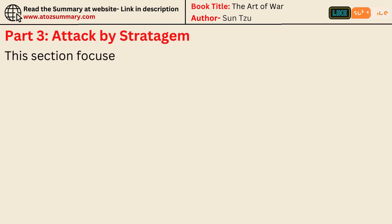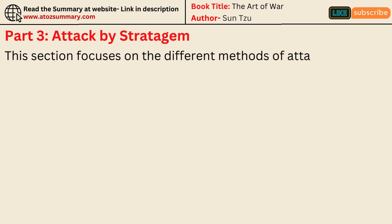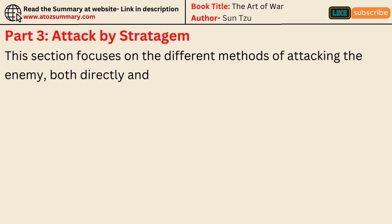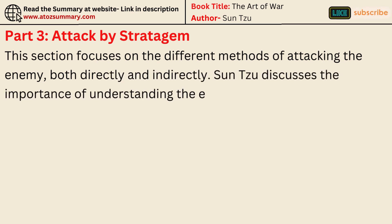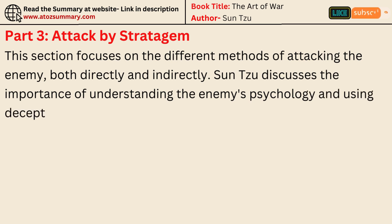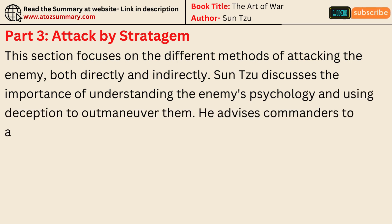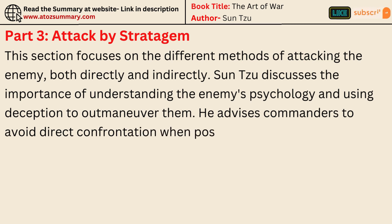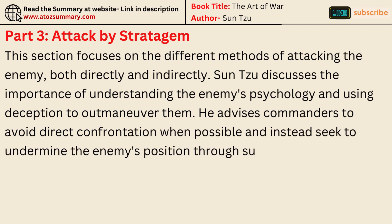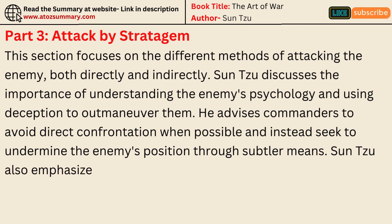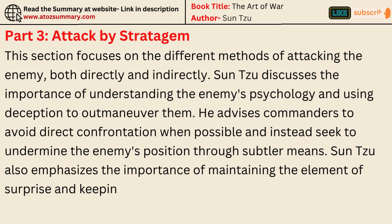This section focuses on the different methods of attacking the enemy, both directly and indirectly. Sun Tzu discusses the importance of understanding the enemy's psychology and using deception to outmaneuver them. He advises commanders to avoid direct confrontation when possible and instead seek to undermine the enemy's position through subtler means. Sun Tzu also emphasizes maintaining the element of surprise and keeping the enemy off balance.